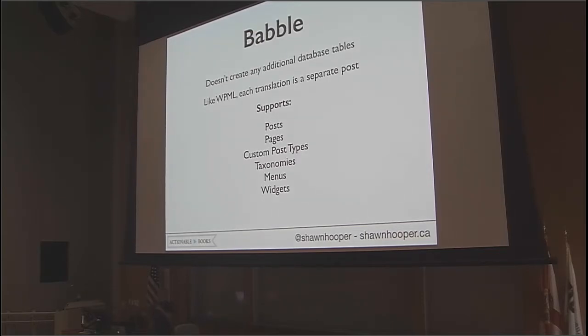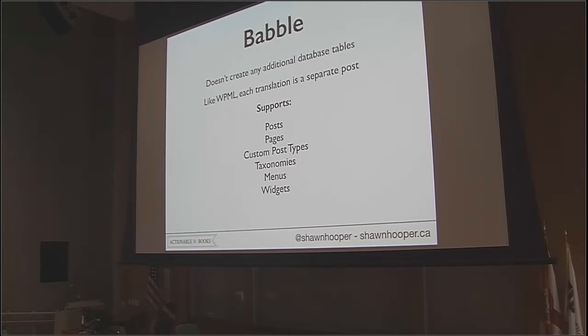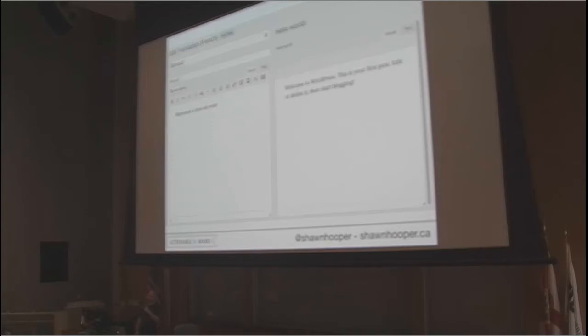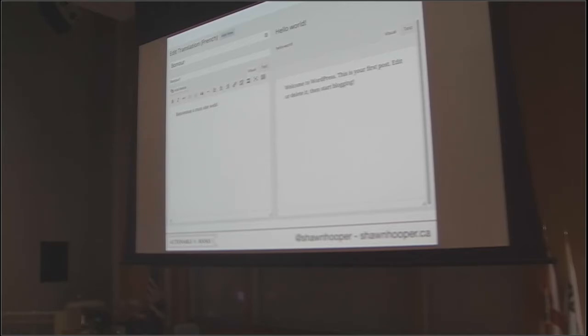Babble's big feature — because it needs to support WordPress.com — is that it doesn't create any additional tables in the database; it makes use of the structure that comes with WordPress core. Like WPML, translations are kept as separate posts. Babble supports posts, pages, custom post types, taxonomies, menus, and widgets. When you're editing a translation, you see them side by side — the English text on the right and the post editor on the left for the French, allowing you to reference the original as you write.